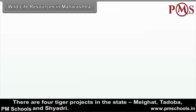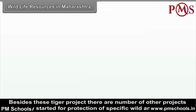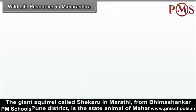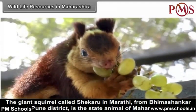There are four tiger projects in the state: Melghat, Tadoba, Pench, and Sahyadri. Besides these tiger projects, there are a number of other projects specially started for the protection of specific wild animals. For example, Dajipur in Kolhapur district is particularly a reserve for bison. The giant squirrel called Shekru in Marathi, from Bhimashankar forest in Pune district, is the state animal of Maharashtra.